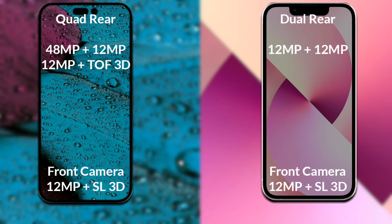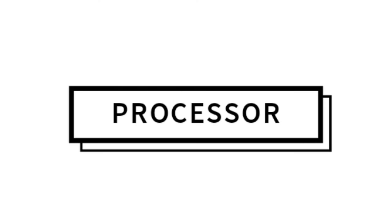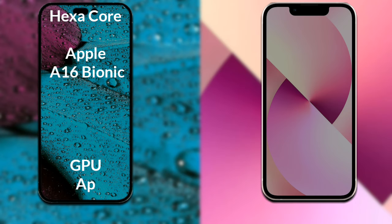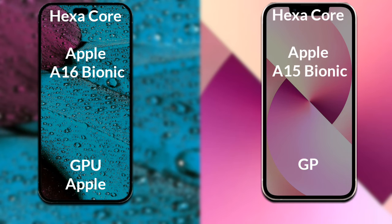Talking about both phones' processors and GPU: the iPhone 14 Pro Max has an Apple A16 Bionic processor with Apple's graphics GPU. The iPhone 13 Mini has an Apple A15 Bionic processor with Apple's graphics GPU.